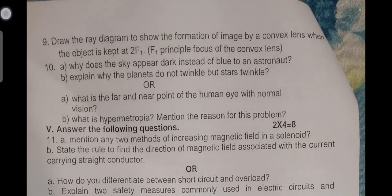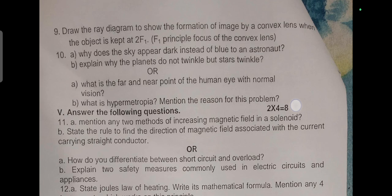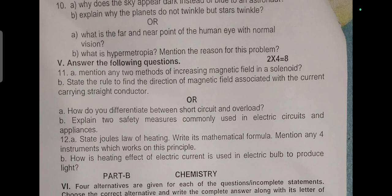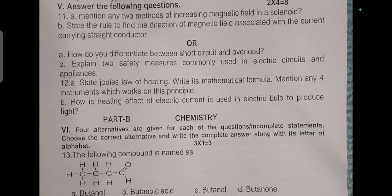Draw the diagram to show the formation of image by a convex lens when an object is kept beyond 2F1, where F1 is principal focus of convex lens. Why does the sky appear dark instead of blue to an astronaut? Explain why the planets do not twinkle but stars twinkle. What is the far and near point of human eye with normal vision? What is hypermetropia? Mention the reason for this problem.